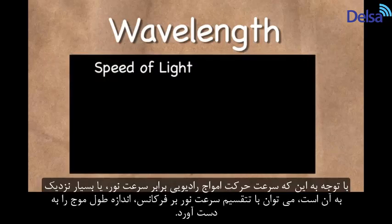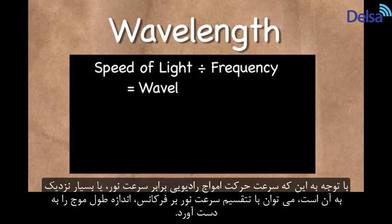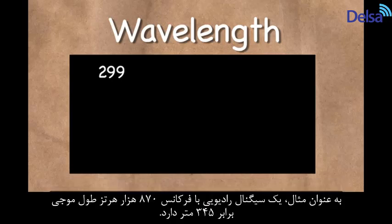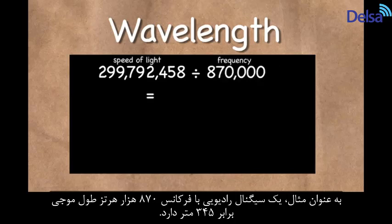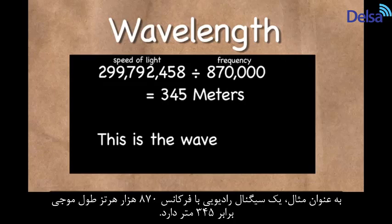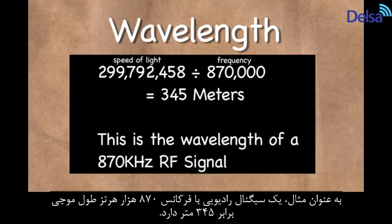Due to the fact that RF travels at the speed of light, or very close to it, the wavelength of a radio wave can be determined by dividing the speed of light by the frequency. As an example, an RF signal with a frequency of 870,000 Hz has a wavelength of 345 m.